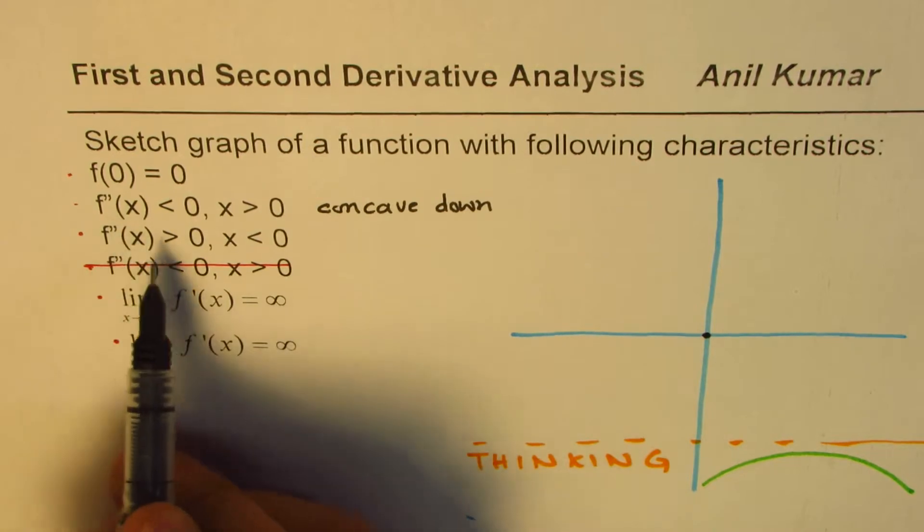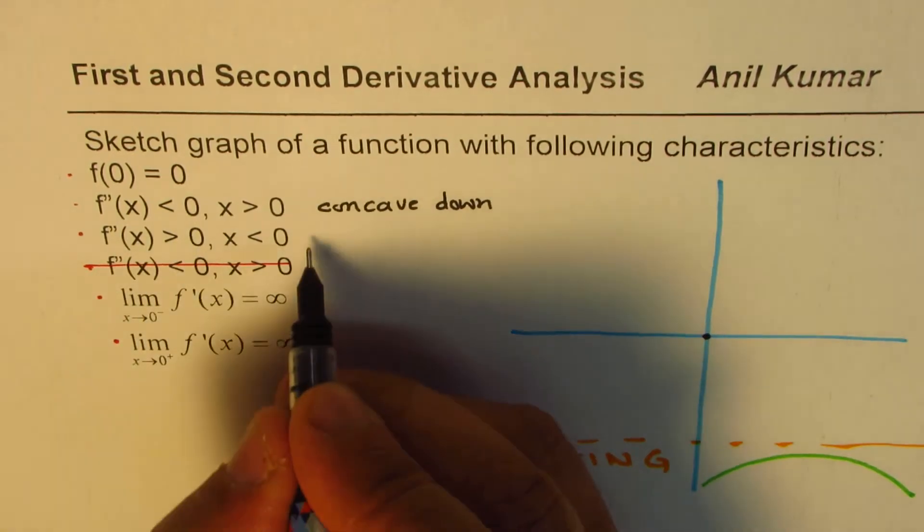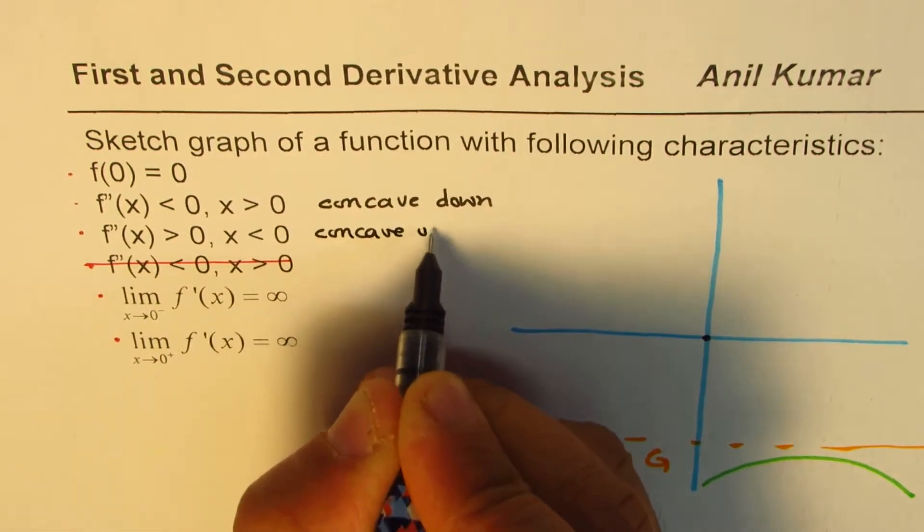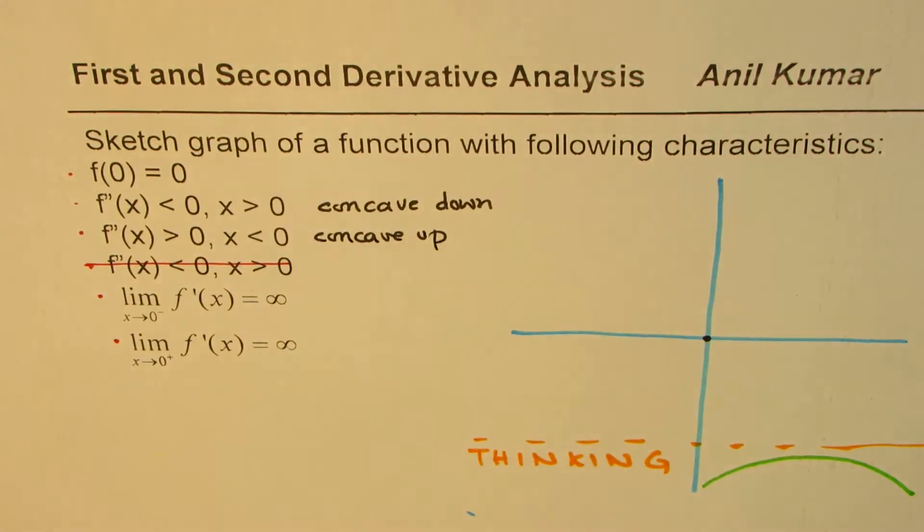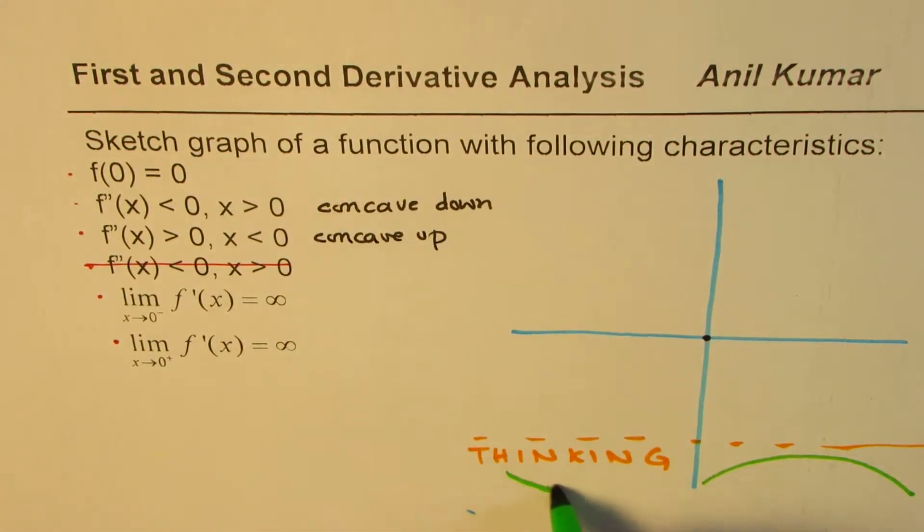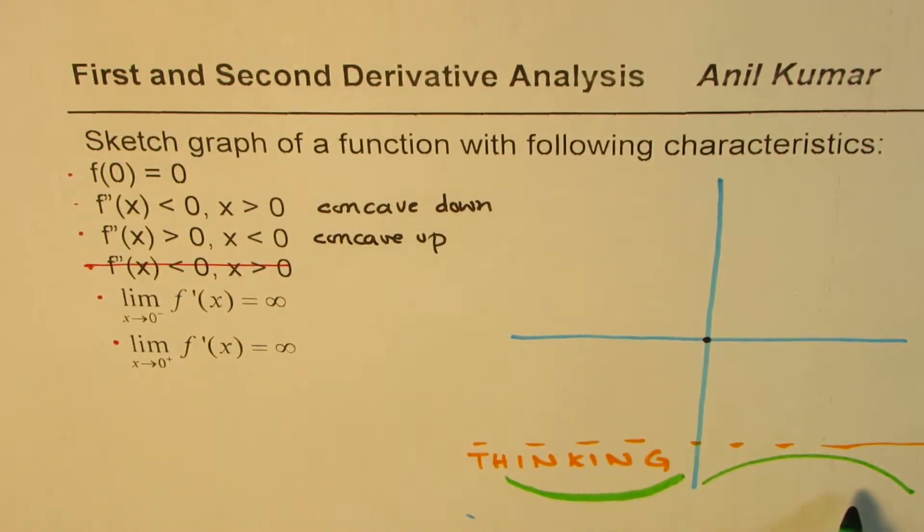Now it says the second derivative is greater than 0 means concave up for x less than 0, that means this part should be concave up, right, that's what it means. So that's the shape of the graph.